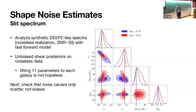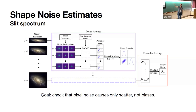This means that fitting 11 parameters to each galaxy is not a hopeless proposal. We can also see that constraining power depends on inclination, which makes sense — in the limit of a totally edge-on galaxy, there would not be much to fit. With this reassurance, we graduate to noisy images to check that noise causes only scatter, not biases, because shear inference is a non-linear process in the noise. We have to be careful about noise biases that have killed many shear estimation methods in the past.